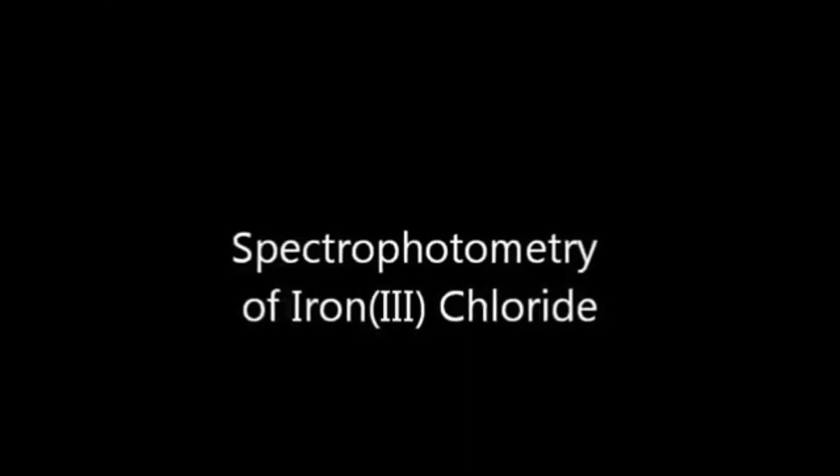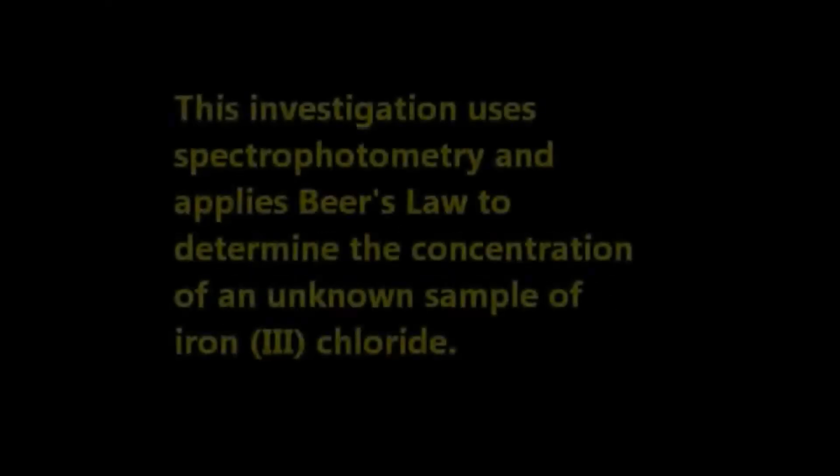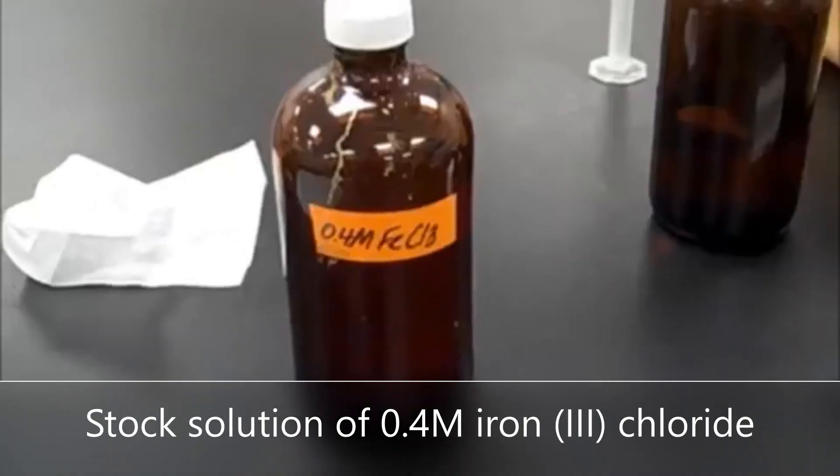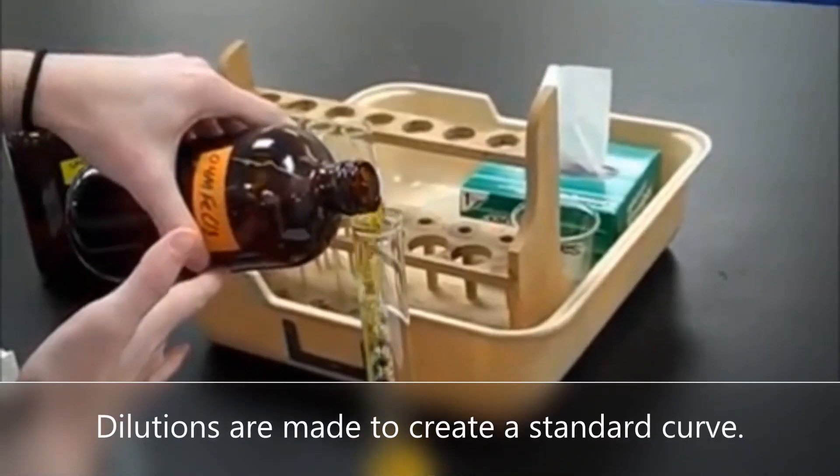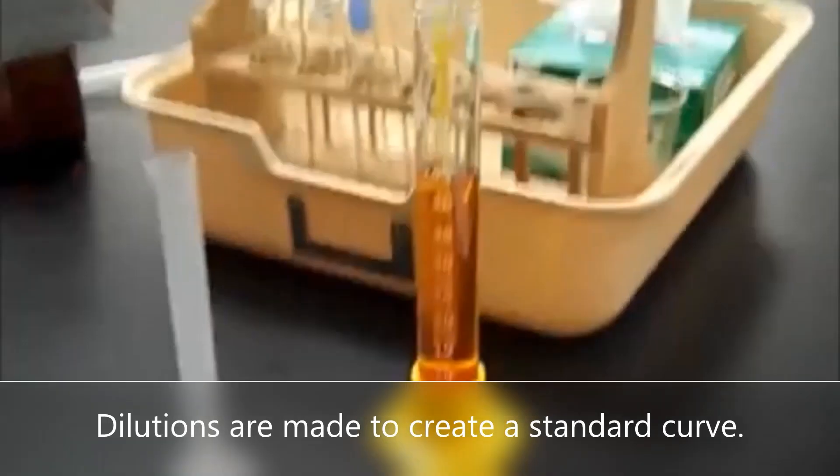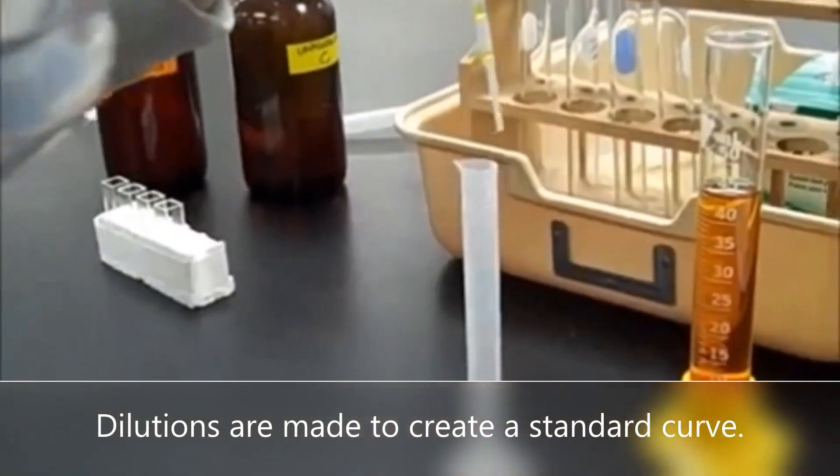This experiment uses spectrophotometry to analyze samples of iron chloride by using the Beer-Lambert law to determine the concentration of an unknown sample. A stock solution of 0.4 molar iron chloride is used to create a number of samples which will be used to create a standard curve.